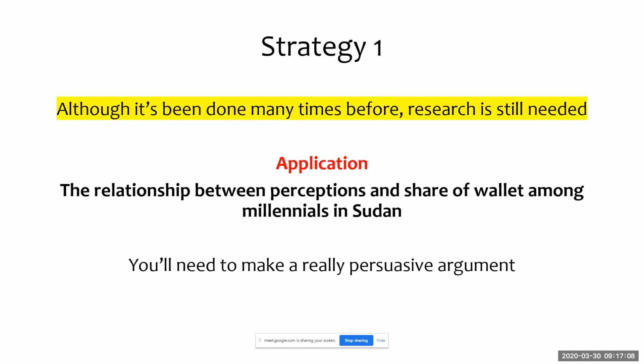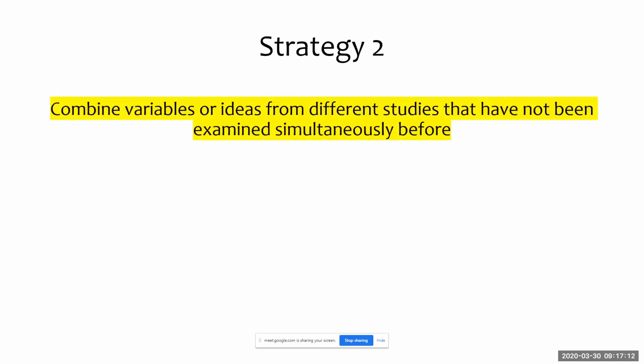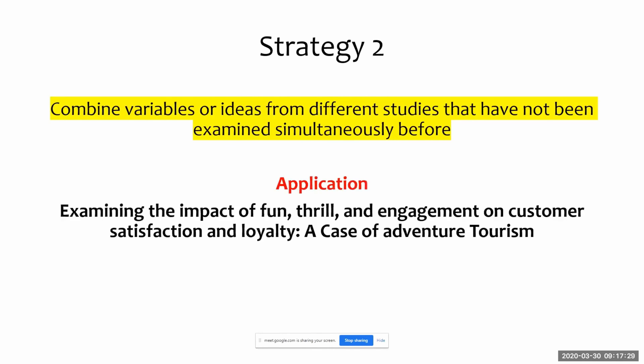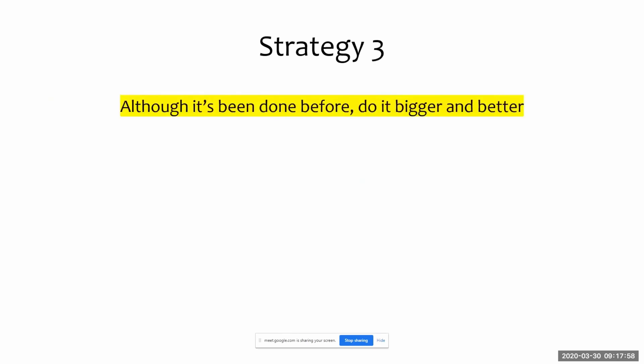Strategy two: combine variables or ideas from different studies that have not been examined simultaneously before. This is what most people do — pick up five different papers, merge all the models into one big model, and say this hasn't been done before. For instance, examining the impact of fun, thrill, and engagement on customer satisfaction and loyalty in adventure tourism. It's a good strategy, but it can be a hard sell because you need to justify the linkages between the different models and why it's important to link them.